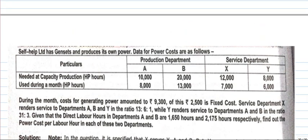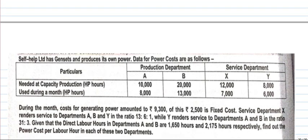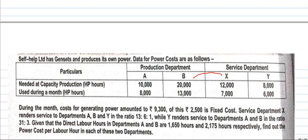Analyzing the question: X is giving service to A, B, and Y — where Y is a service department. But Y is only giving service to A and B — Y is not giving service back to X. So this is a step ladder case. X gives service to another service department (Y), but Y does not give service back to X, confirming the step distribution method applies.